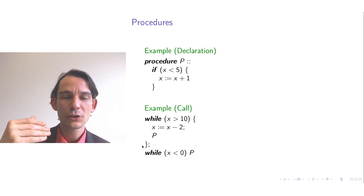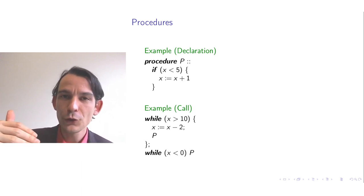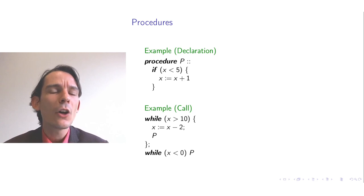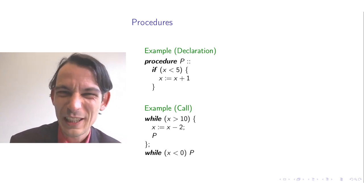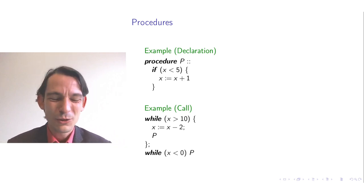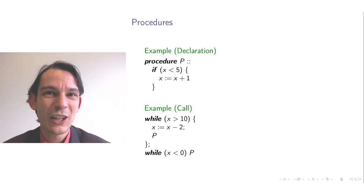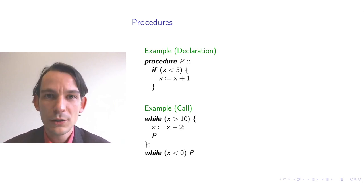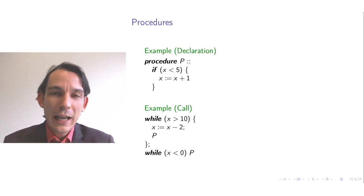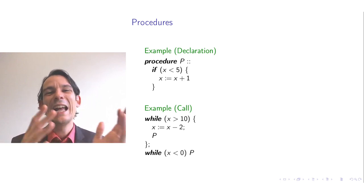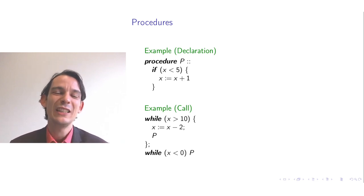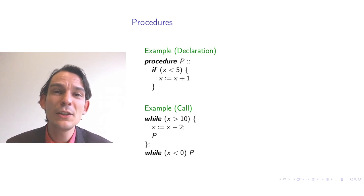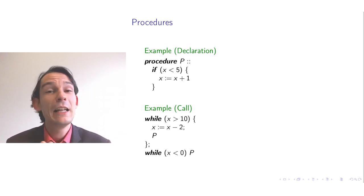It is important to temporarily store the control point after a procedure call because there can be multiple call sites — occurrences of the procedure name in the program. The stored control point tells us where to return after executing the procedure body. This temporary storage of control points is called a call stack. In most implementations, the call stack and the temporary variable stack for locals are combined into a single data structure simply called the stack.